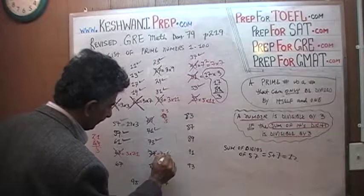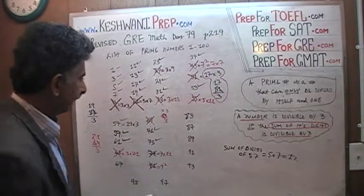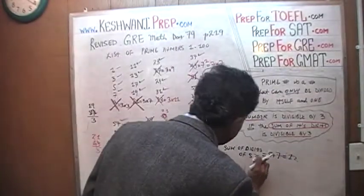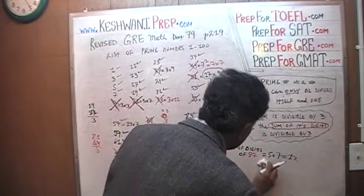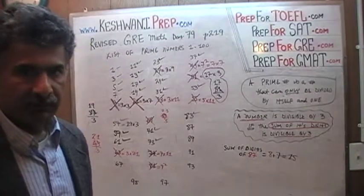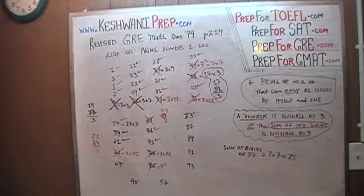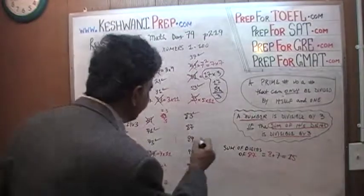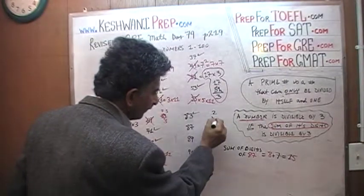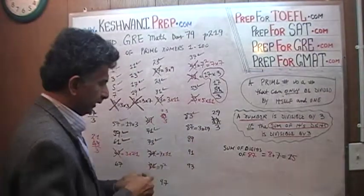77 is no good — it is 7 times 11. What about 83? 83 is okay. What about 87? The sum of the digits of 87 is 8 plus 7, which is 15. Since we can divide 15 by 3, 87 can be divided by 3. How many 3s in 8? Two, with 2 remaining. The remaining 2 joins the 7 to become 27, and 27 divided by 3 is 9. Which means 87 is 3 times 29 — it is no good.